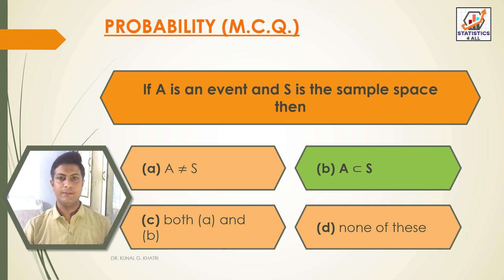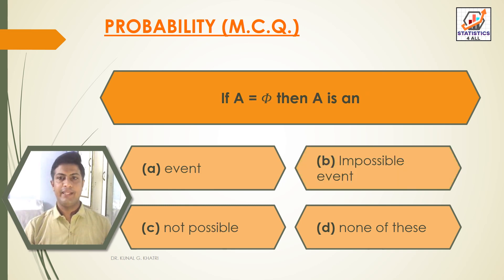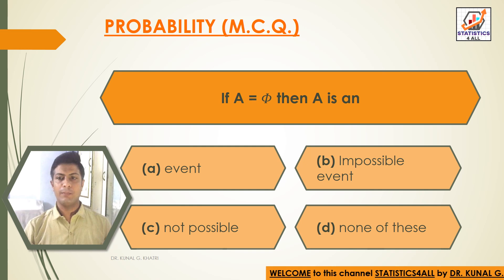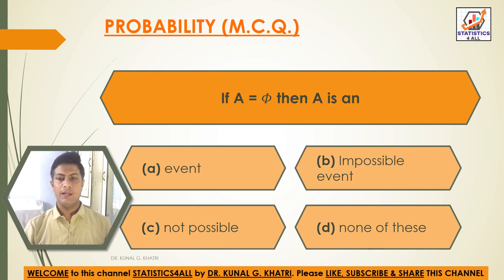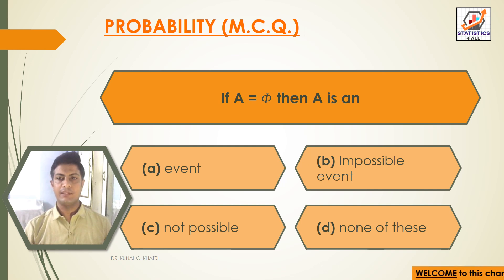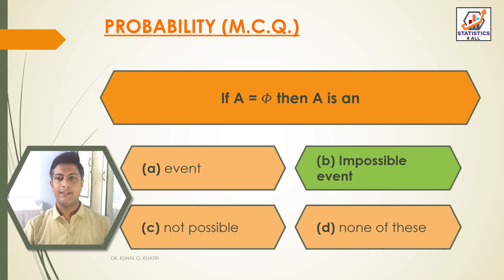Next question: if A is equal to phi or null set, then A is an — Option A: event. Option B: impossible event. Option C: not possible. Option D: none of these. The answer is Option B — impossible event. If A equals the null set, then A is an impossible event.